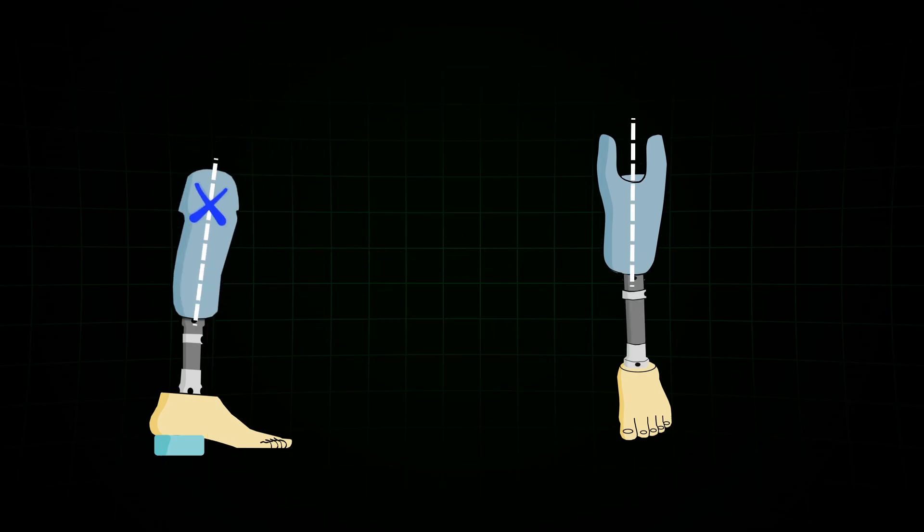That means our reference line now goes through this point with our individual flexion tilt and the reference line on our prosthetic foot depending on the instructions from the manufacturer. That is the sagittal workbench alignment. Manageable, right? In between, always check if your socket is rotated correctly.